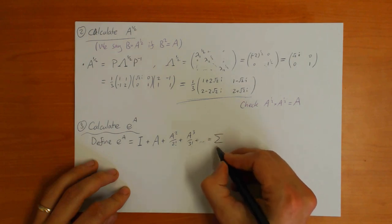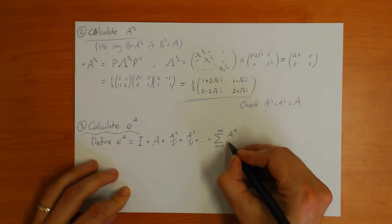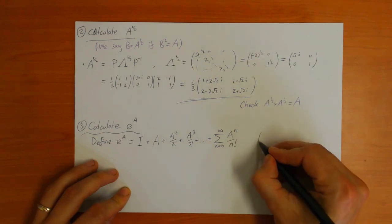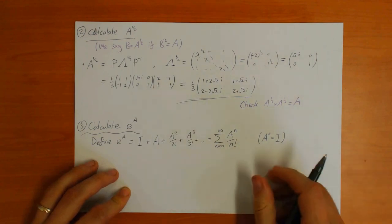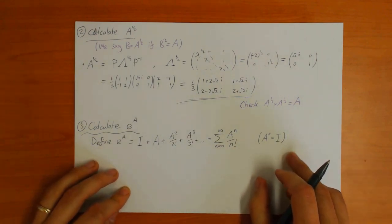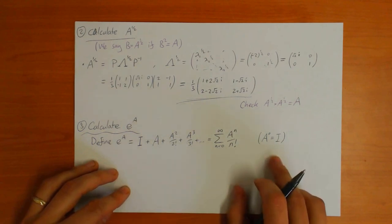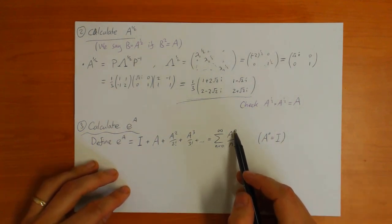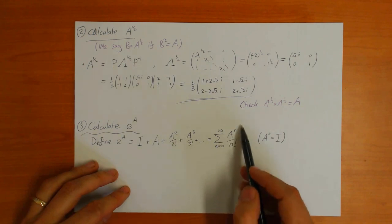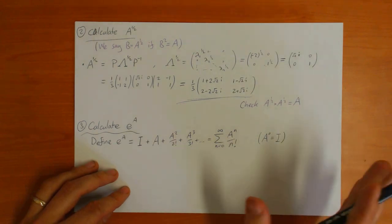We can write this as the sum from n equals 0 to infinity of A to the n over n-factorial, where we use the notation that A to the power 0 is the identity matrix. We can define it this way, but obviously if you try to calculate this just by multiplying A together you're going to have a tough time, because A to the n is in general hard to calculate.